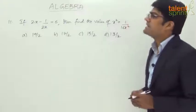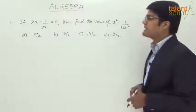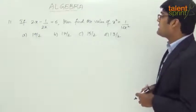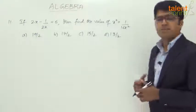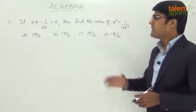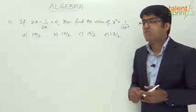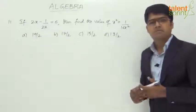Let's have a look at it. It says if 2x minus 1 by 2x equals 6, then find the value of x squared plus 1 by 16x squared. And the given answer options here are 19 by 2, 17 by 2, 15 by 2, and 13 by 2.